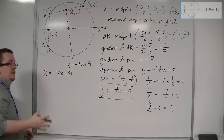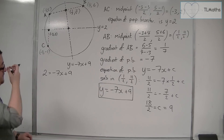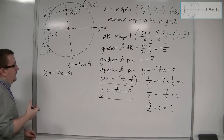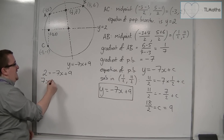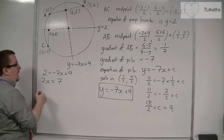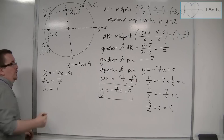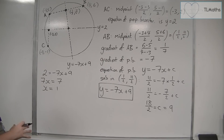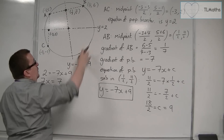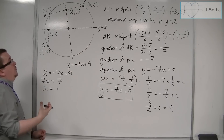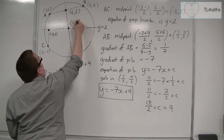Setting the two equations equal finds the x-coordinate of the centre. Adding seven x to both sides and taking two from both sides gives seven x equals seven, so x equals one. And if x is one, the y-coordinate is two. So the centre of the circle is at one, two.